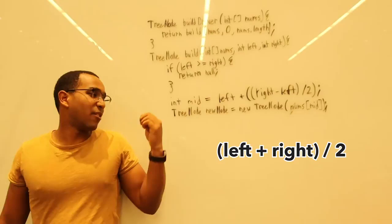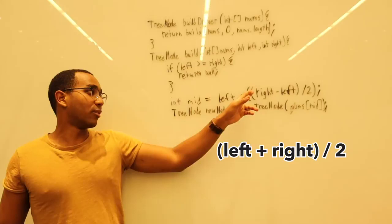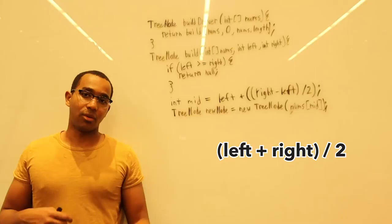If we can calculate the exact half by using subtraction, we can avoid overflow instead of adding left and right. Because if left and right are very large, we could overflow. In this case, we're only doing a decreasing operation.